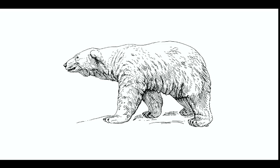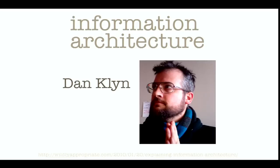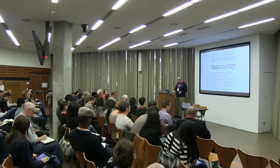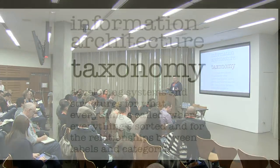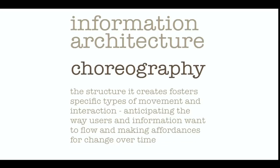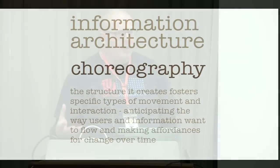So let's start with information architecture as the foundation. This is Dan Klein, and he has a wonderful way of explaining information architecture. He talks about it having three parts. The first part is ontology — how we define and articulate the rules and patterns that are going to govern the meaning we want to communicate. The second part is taxonomy: it's labeling, what we call things, how we organize things, and the relationships between labels in those categories. And that all comes together in choreography, where there's movement and interaction — both the information and the user — and making affordances for this movement to happen and change over time.